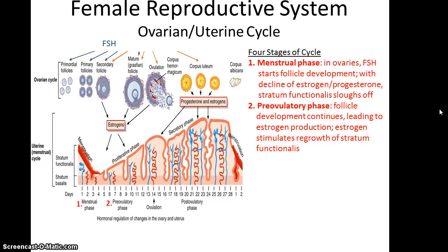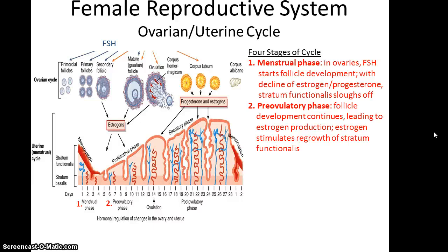There are four stages to the ovarian-uterine cycle. The first stage is menstruation — the sloughing off of the old stratum functionalis. In the ovaries, this is when follicle-stimulating hormone is stimulating follicular development. Since there is a decline in estrogen and progesterone, the stratum functionalis sloughs off.